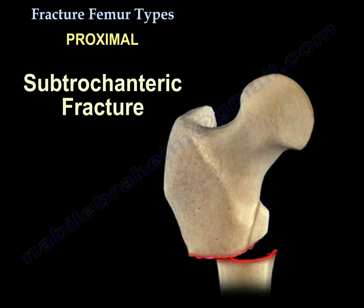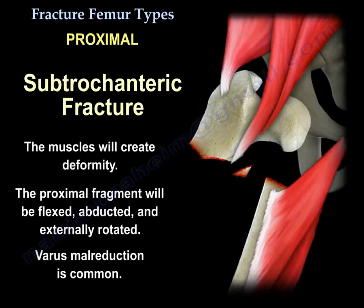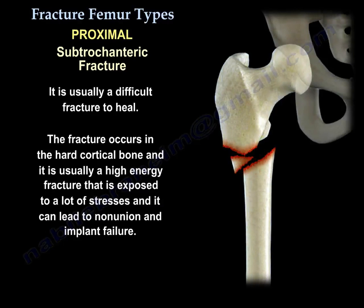Another fracture is the subtrochanteric fracture of the femur. The muscles create deformity — the proximal fragment will be flexed, abducted, and externally rotated, as seen in this diagram, and varus malreduction is common. It is usually a tough fracture to heal, occurring in hard cortical bone, typically a high-energy fracture exposed to a lot of stresses, which can lead to non-union and implant failure.